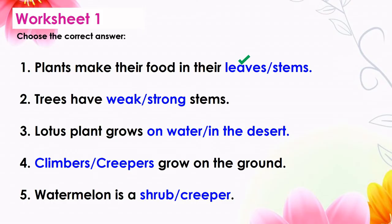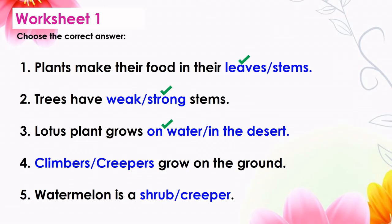Question 2: Trees have weak or strong stems? The correct answer is strong stems. Question 3: Lotus plant grows on water or in desert? The correct answer is on water. Question 5: Watermelon is a shrub or creeper? The correct answer is creeper.